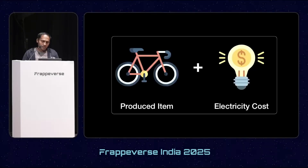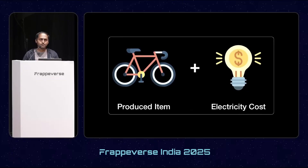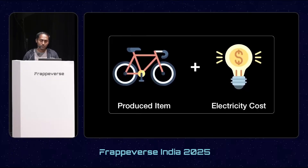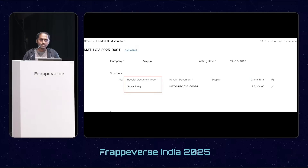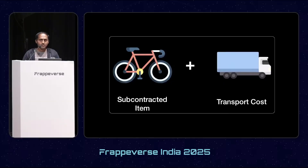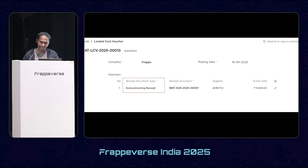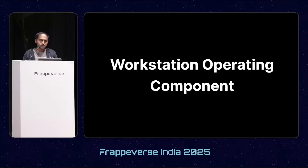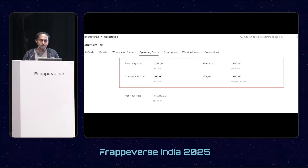Next is landed cost for post-manufacturing. Suppose you manufactured your finished goods in the middle of the month and received the electricity bill at the end of the month, and you also want to add the electricity cost to the valuation of the finished item. In v16, you will be able to make a landed cost voucher against the manufacturing stock entry. Similarly, for subcontracting, if you have a fixed transporter who sends the transportation bill at the end of the month, you can now make a landed cost voucher against the subcontracting receipt.